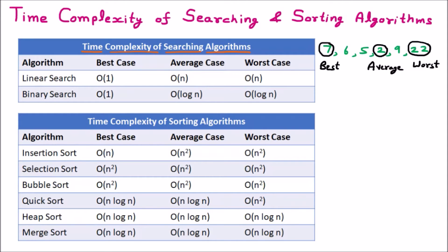So for finding the complexity we have to focus on three cases: best case, average case, and the worst case. In examinations they mostly focus on the worst case, and in general life we also work on the worst case complexity. We should see the worst phase of the algorithm — if the elements are not in the proper position and we have to apply the search. So in every case, our main focus will be on the worst case. If somebody asks you what is the time complexity of an algorithm, you should always give the answer in the worst case.